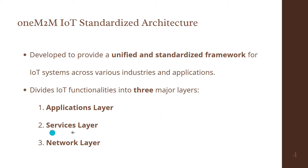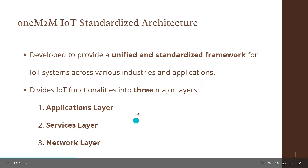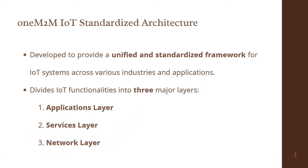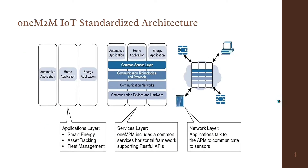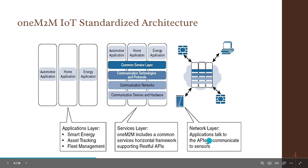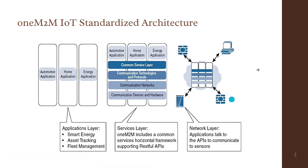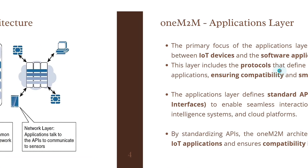The three layers are: Application layer, Services layer, and Network layer. Starting with the Application layer — there are Automotive applications, Home applications, and Energy applications. The Services layer includes Common Service Layer and Communication Technology Protocols. In the Network layer, applications talk to the API to communicate to sensors.